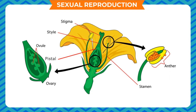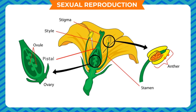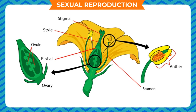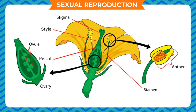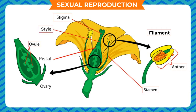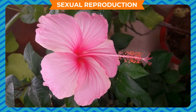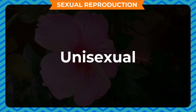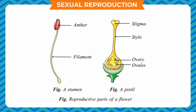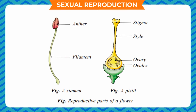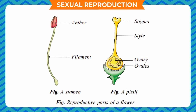Sexual Reproduction: When two sexes are involved in the process of reproduction, it is called sexual reproduction. A complete flower has both male and female reproductive parts. The male reproductive part is called the stamen, which consists of the filament and the anther. The female part is constituted by the ovary, style, and stigma, collectively called the pistil. If a flower has only one sex, it is called unisexual, whereas a flower with two sexes is bisexual. The fusion of male gamete and female gamete results in the formation of an ovule, which gives rise to a zygote.